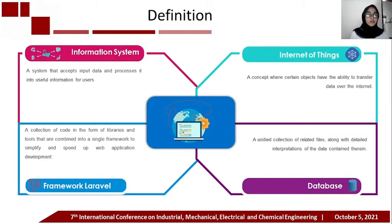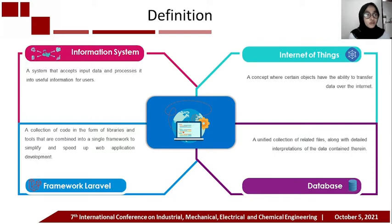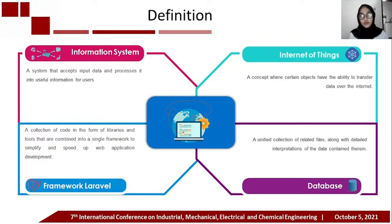Next, the information system is a system that accepts input data and processes it into useful information for users. Next, the Internet of Things is a concept where certain objects have the ability to transfer data over the internet. Next, a database is a unified collection of related files along with detailed interpretation of the data contained therein.